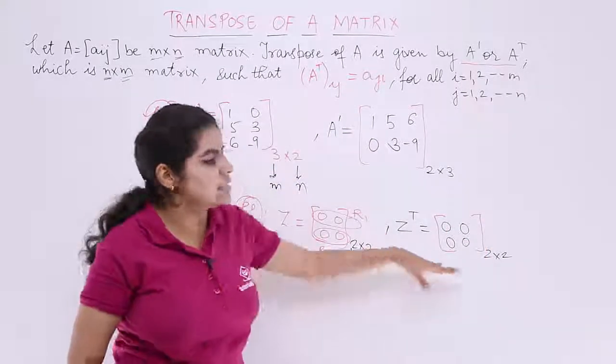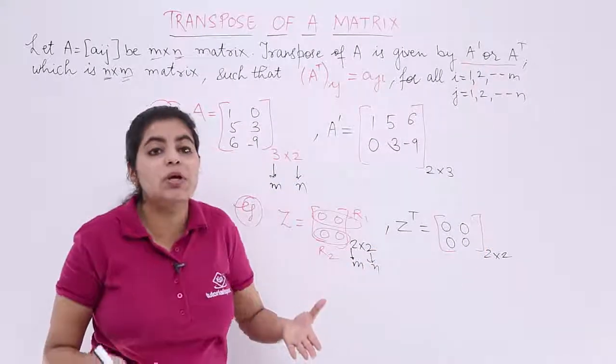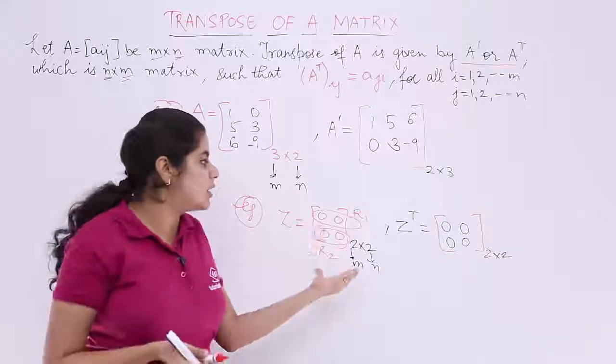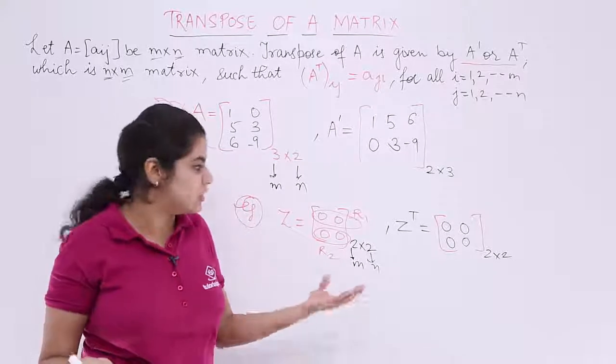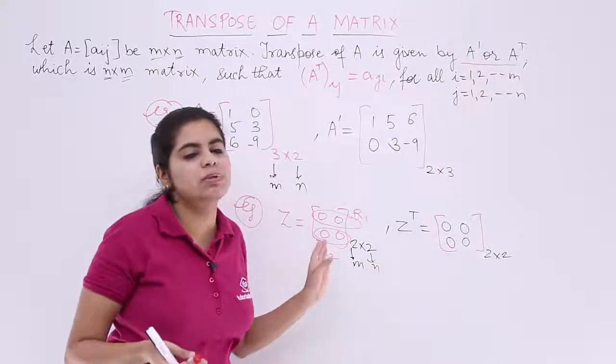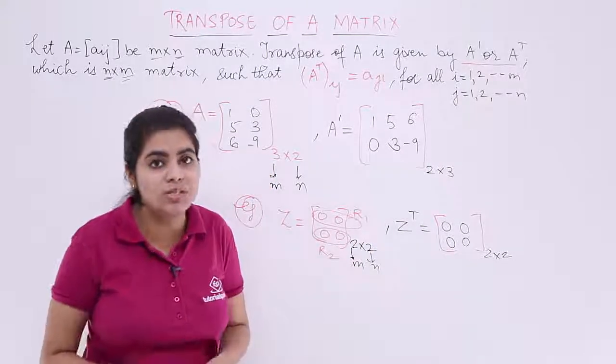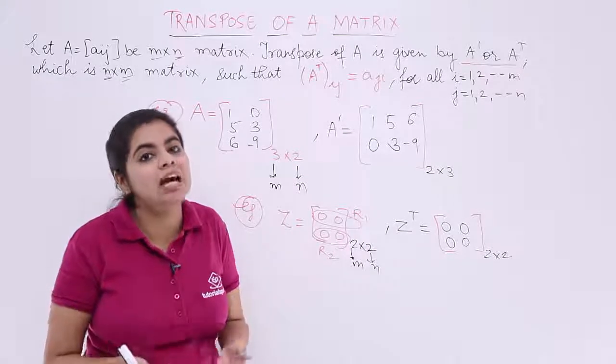You see that these things are identical? Why? Because all the elements of the given matrix were same. So even if you take transpose, things don't change. Things will remain the same only. The rows will change to columns, the columns will change to rows, but the elements are actually the same.